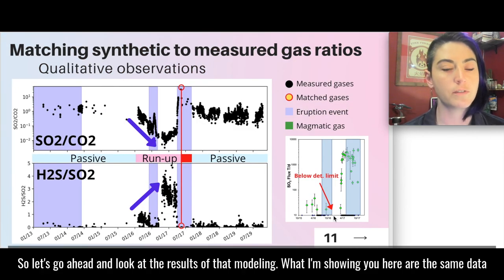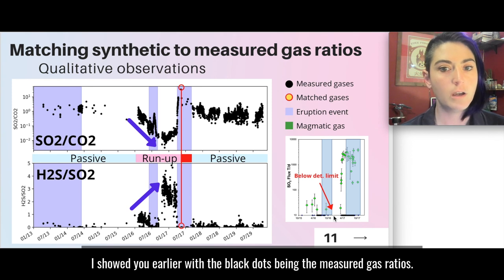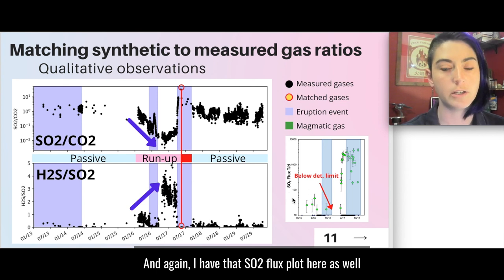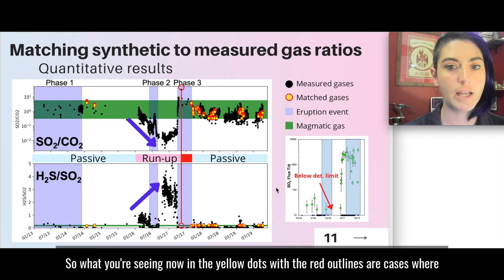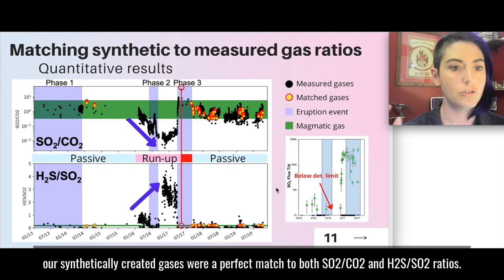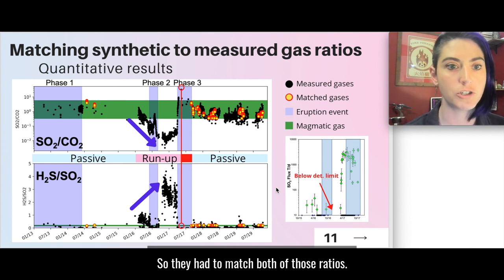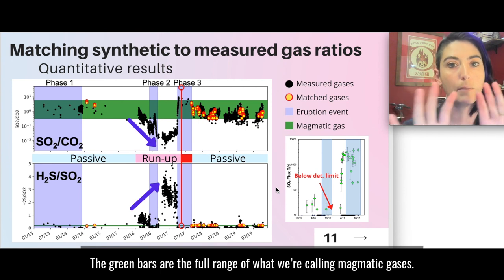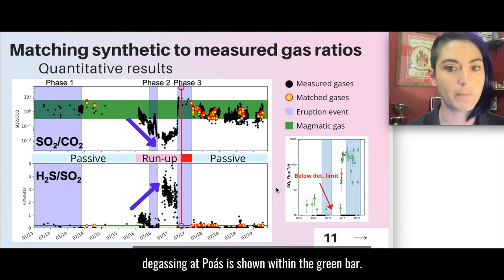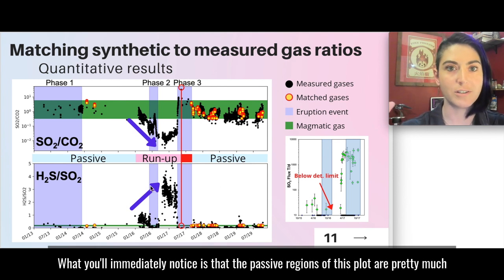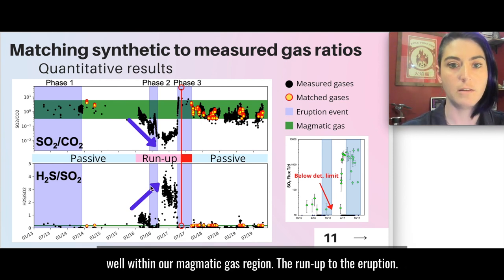So let's go ahead and look at the results of that modeling. What I'm showing you here are the same data I showed you earlier, with the black dots being the measured gas ratios. And again, I have that SO2 flux plot here as well. And we can plot our synthetic gases on top of this. So what you're seeing now in the yellow dots with the red outlines are cases where our synthetically created gases were a perfect match to both SO2/CO2 and H2S/SO2 ratios. So they had to match both of those ratios. The green bars are the full range of what we're calling magmatic gases. So again, anything that could be feasibly produced by magmatic degassing at Poas is shown within the green bar.